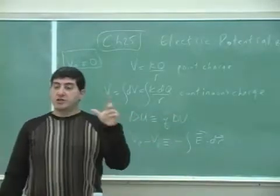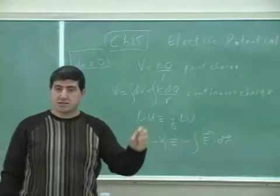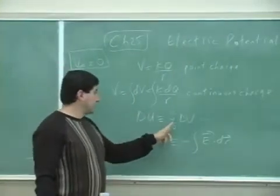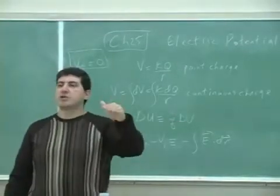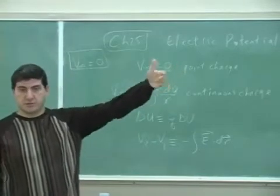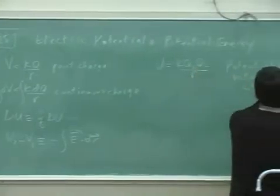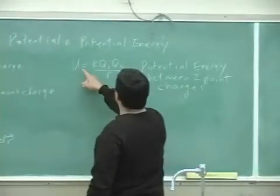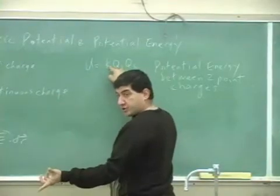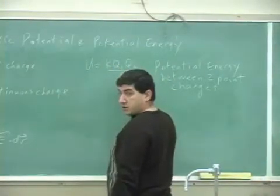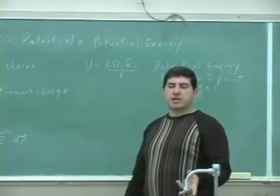The potential energy difference — the potential energy that a charge loses or gains — is defined as the charge of that particle times the difference of the potential created by the second particle. This gives us the potential energy between two point charges, because the potential created by the first charge is kq over r, and the second charge is q2. We call that binding energy.